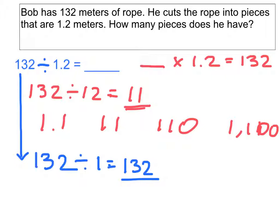My closest out of all of my choices is 110. And it makes sense that my answer is larger than 11, because I'm not cutting the rope into 12-meter pieces, I'm cutting it into just smaller, 1.2-meter pieces. So, I'm going to need more pieces to create the entire length of 132 meters of rope. So, in the end here, we know that Bob has 110 pieces.